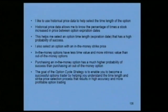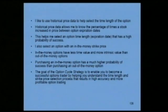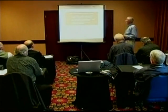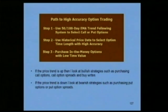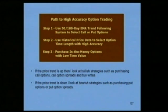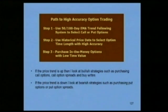The goal of the option cycle strategy is to enable you to become a successful trader by helping you understand the time length and strike price selection process. The path to high-accuracy option trading is to use trend following systems to select either a call or a put option depending on the trend, then use historical price data to select the option time length, and then purchase an in-the-money option with low time value. The calculators come in handy because you can do these calculations before you take the trade.